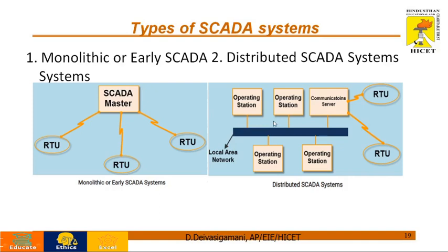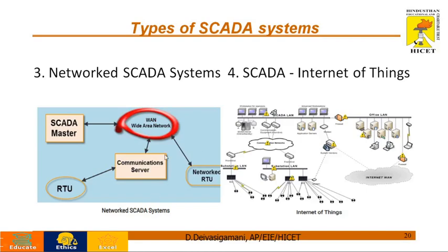The second generation is the distributed SCADA system, which is somewhat developed from the early one. Separate units have been distributed in this SCADA, and all systems are connected via LAN network with distributed IOs communication. The third generation is the network SCADA system — completely network oriented where wide area network is connected, establishing different communication servers, network RTUs and MTUs. The fourth generation is IoT-based SCADA — the most recent development — where all information is stored in the cloud and decisions are obtained from cloud data. It is completely wireless and information is retrieved very quickly.